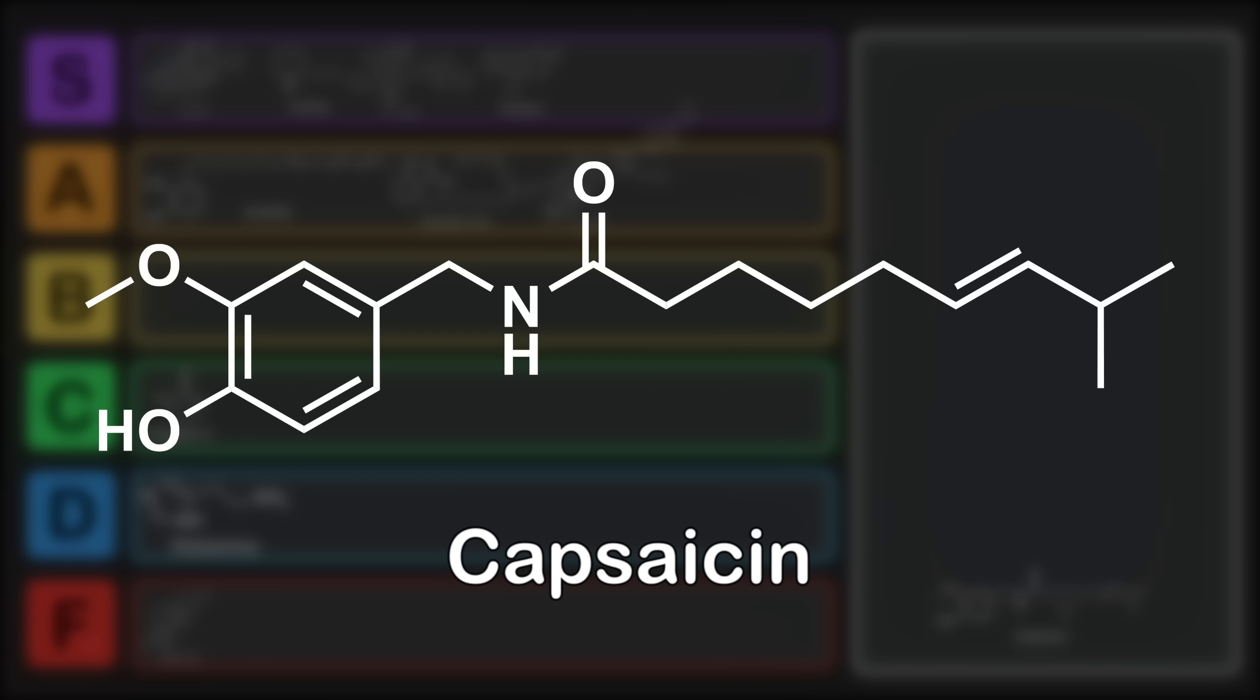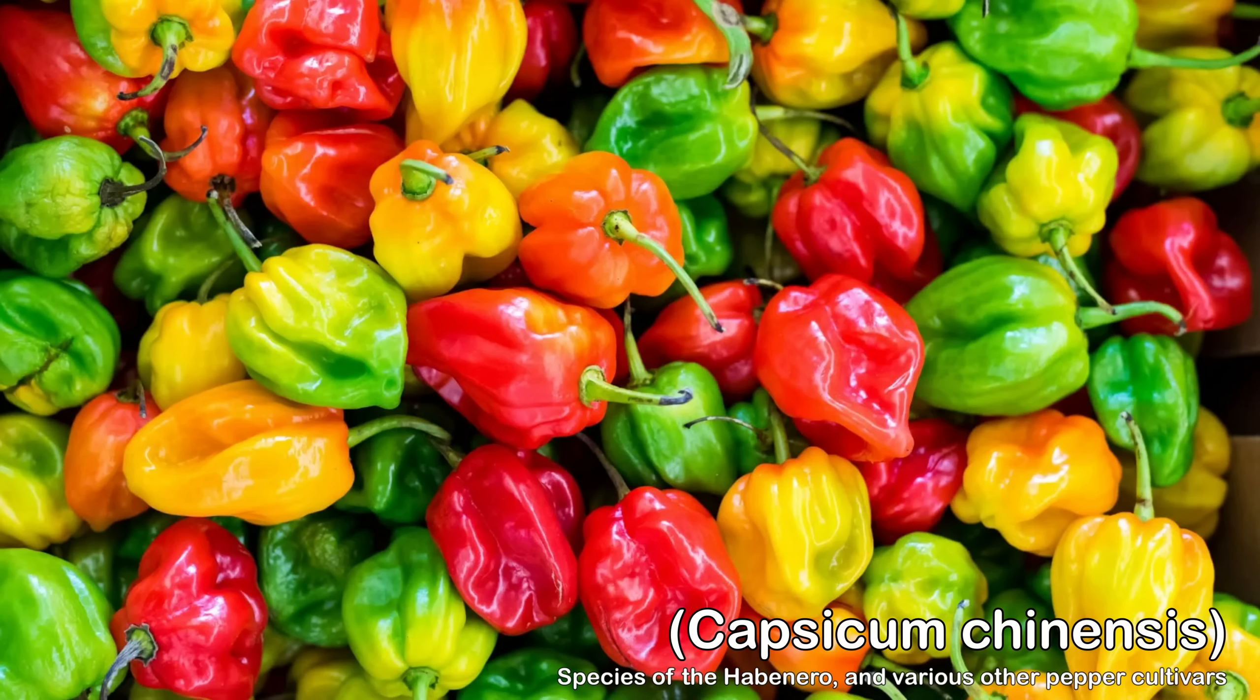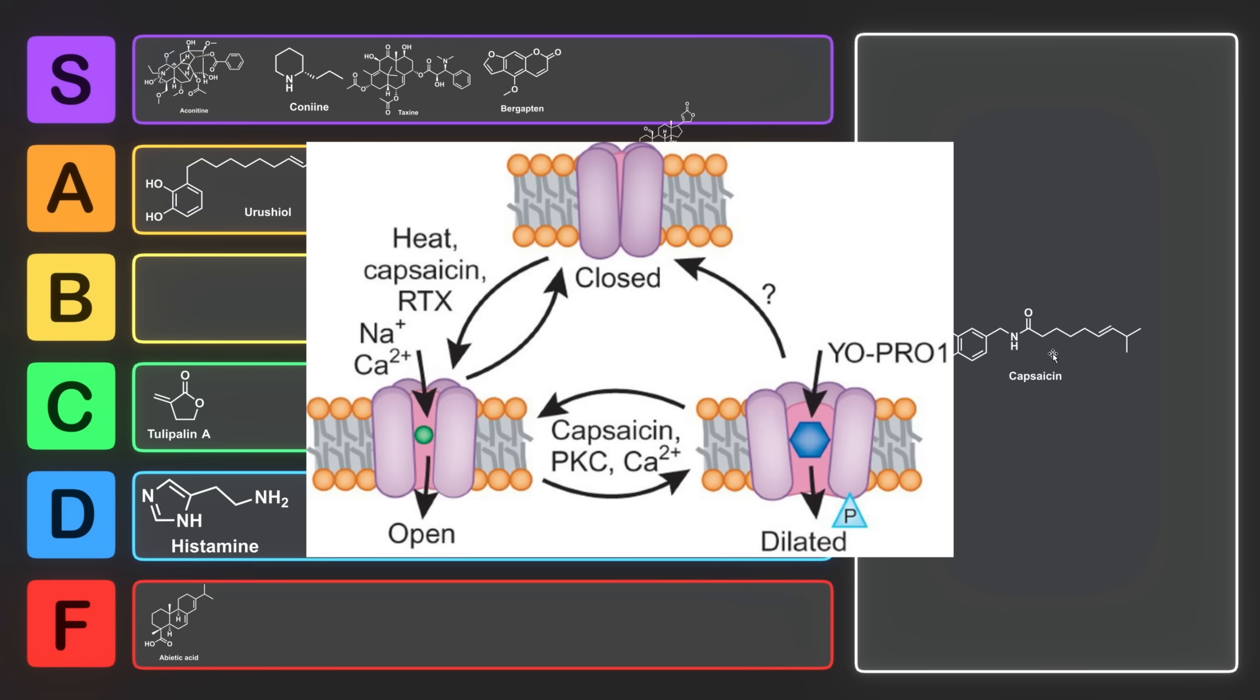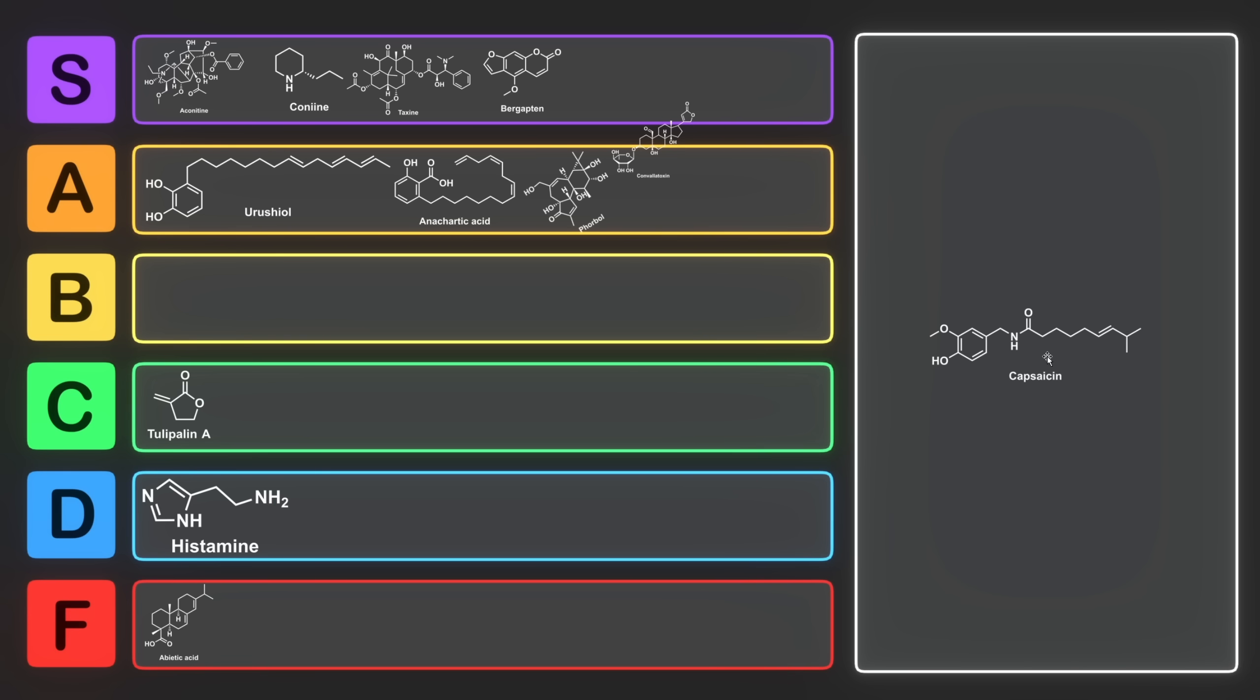Last but not least, we have capsaicin. Capsaicin is the compound found in peppers that gives them their characteristic heat. It's a derivative of vanillin, and you could consider this a vanillyl amide, which is what this portion of the molecule is called. It's bound through this carboxylic acid derivative, which together forms an amide. Capsaicin works by triggering the TRPV1 protein, which is a structure that sends signals to the nervous system saying that things are hot or you're in pain. While TRPV1 is triggered primarily by high temperatures, such as those over 43 degrees Celsius or so, it's also triggered by acidic conditions and, of course, capsaicin.